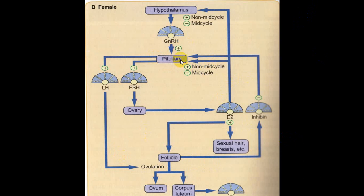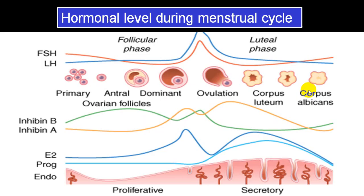Inhibin inhibits the pituitary gland to reduce production of FSH and LH. Estradiol inhibits at the hypothalamic level to reduce GnRH production. This constitutes the regulatory feedback mechanism in the female. FSH gives rise to follicular development, then ovulation with corpus luteum formation, followed by a fall in FSH and LH levels, completing the normal menstrual cycle.